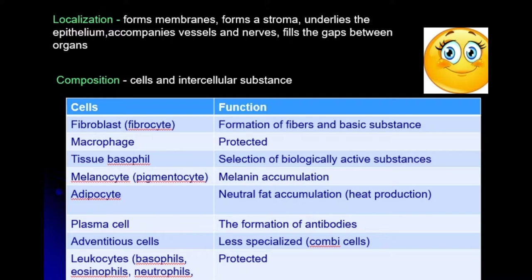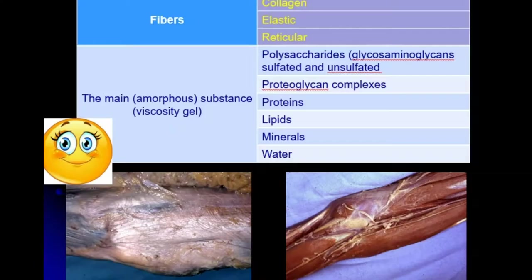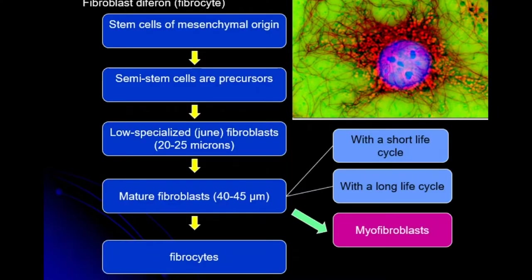Free cells come from other types of tissues, such as macrophages, which originate in the bone marrow. Also tissue basophils, plasma cells, and leukocytes are free cells. Sometimes in the loose connective tissue you can also find melanocytes and adipocytes, which originate elsewhere. They do not produce components for the extracellular matrix, so they are not considered main cells.